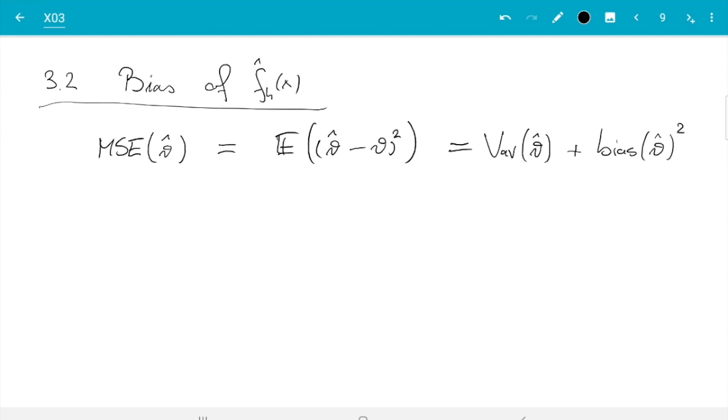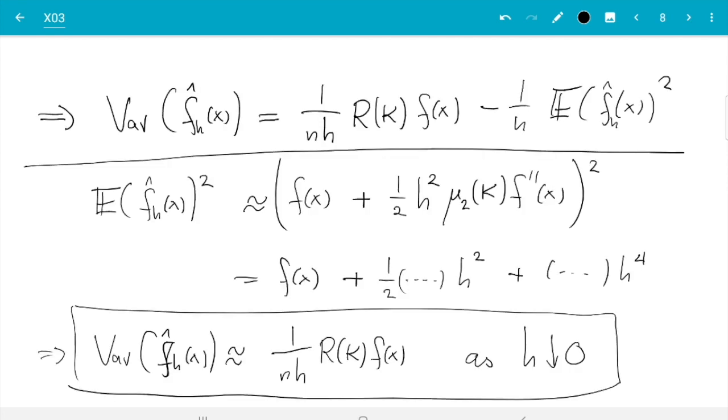Good, so let's just do that. Here, mean squared error of f-hat_h of x, that's our estimator, is variance plus bias.